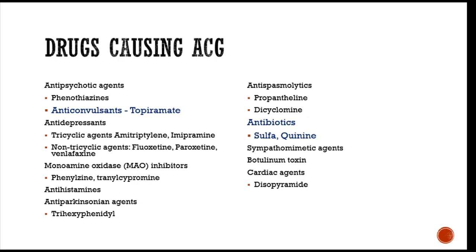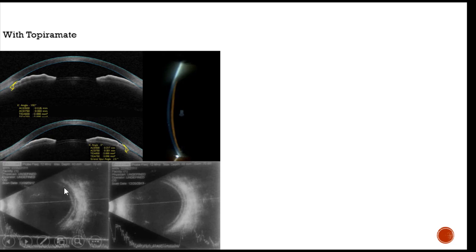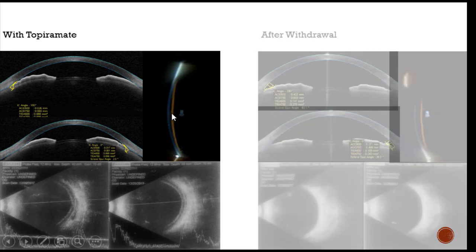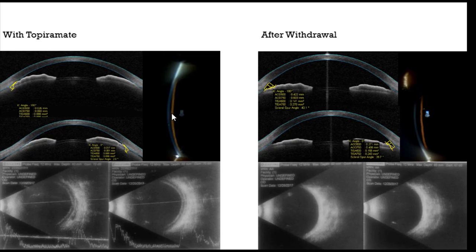Topiramate was initially an anticonvulsant but is now used for headache, migraine, and obesity. In one patient on topiramate for one week, sudden blurring of vision occurred. B-scan imaging showed fluid accumulation within the retinochoroidal layers, the iris-lens diaphragm pushed forwards, and a very small gap between the cornea and iris indicating angle closure. Anti-glaucoma medications were given temporarily and topiramate was stopped; three days later there was significant widening of the anterior chamber angle, the gap between cornea and iris had increased, and the choroidal edematous fluid had disappeared.